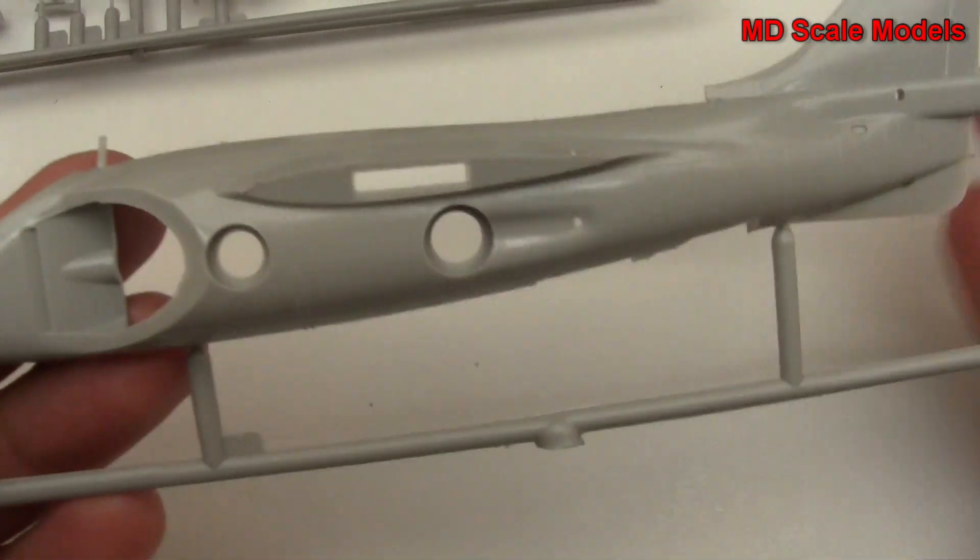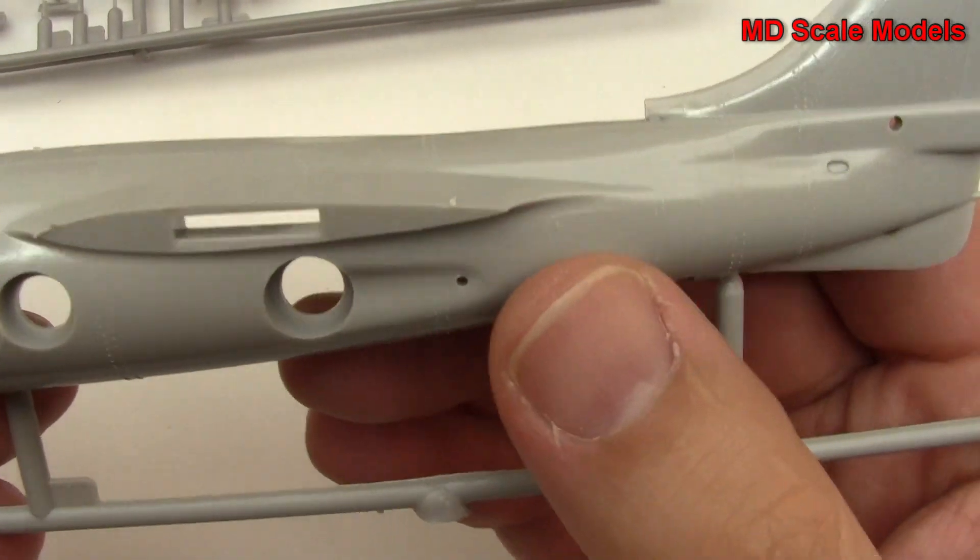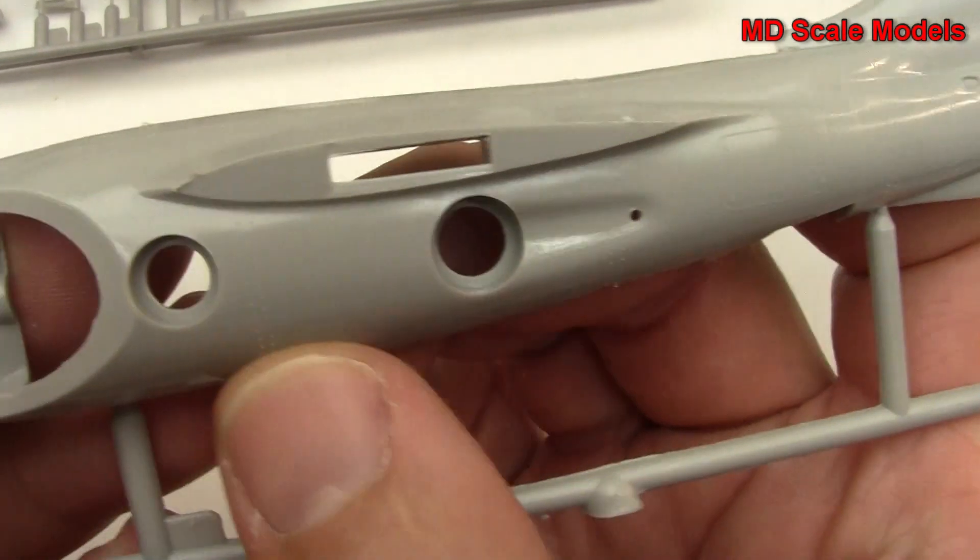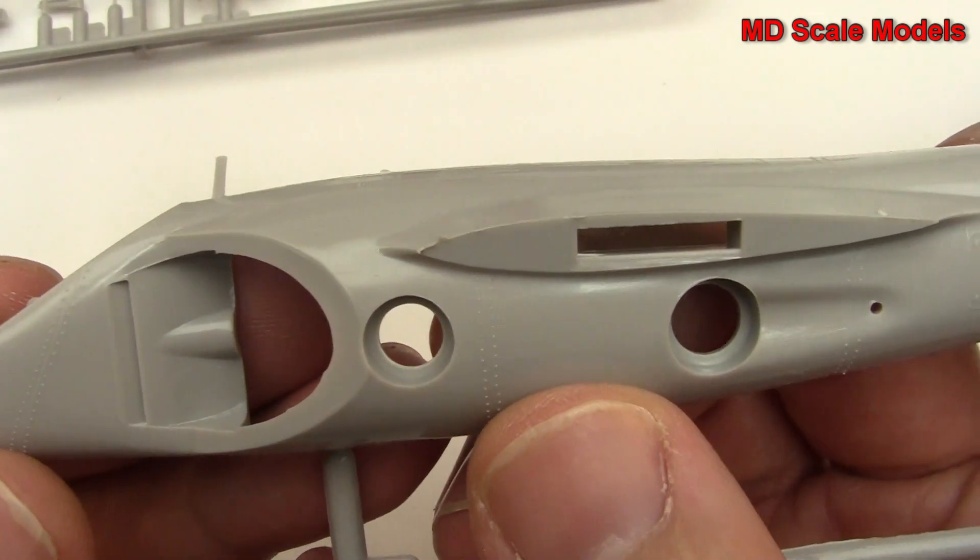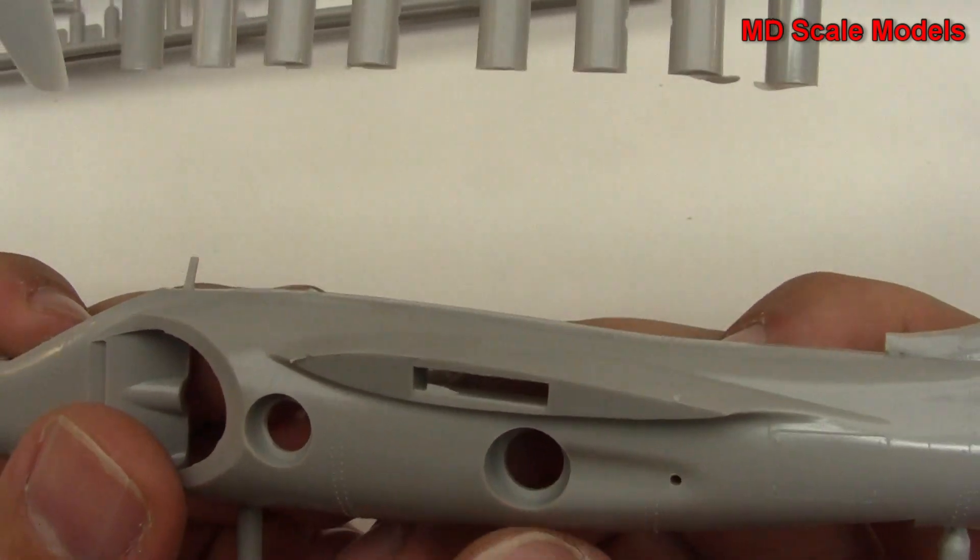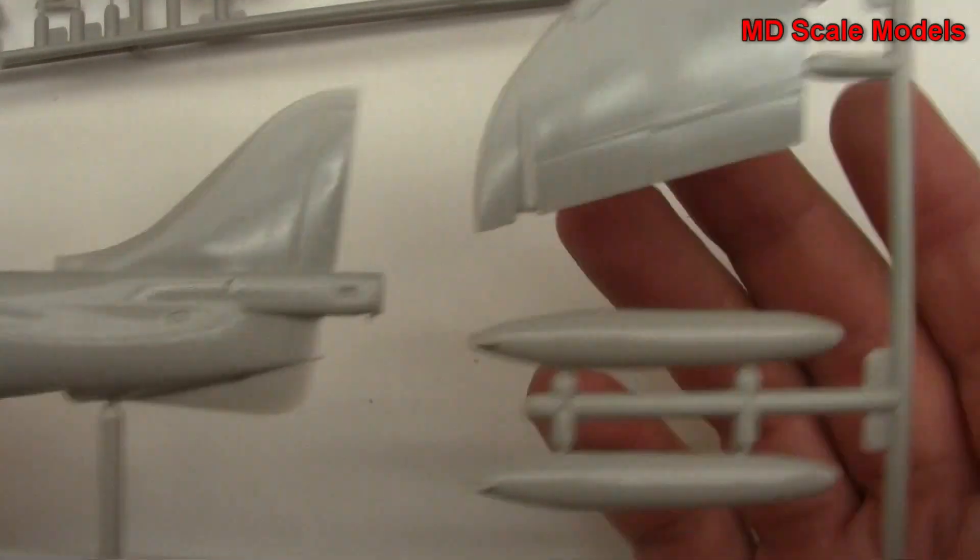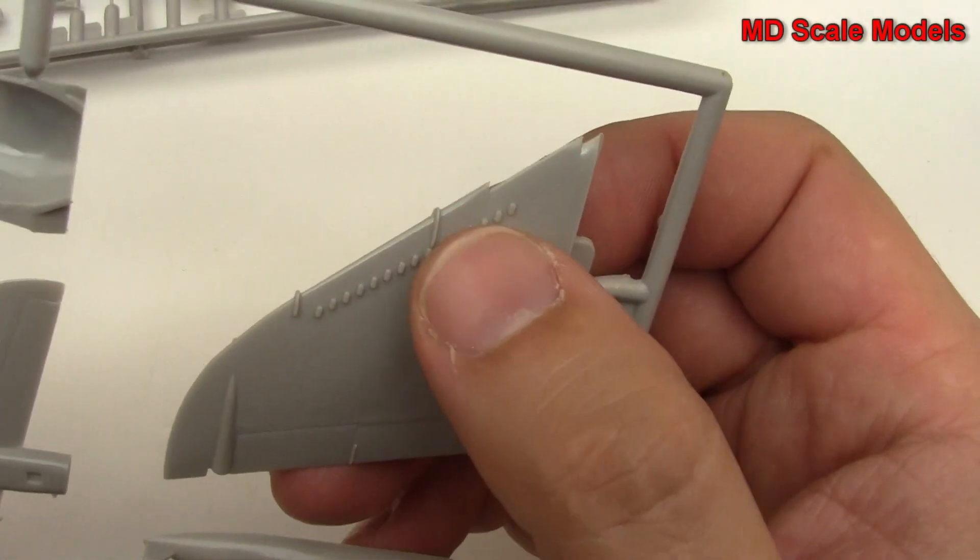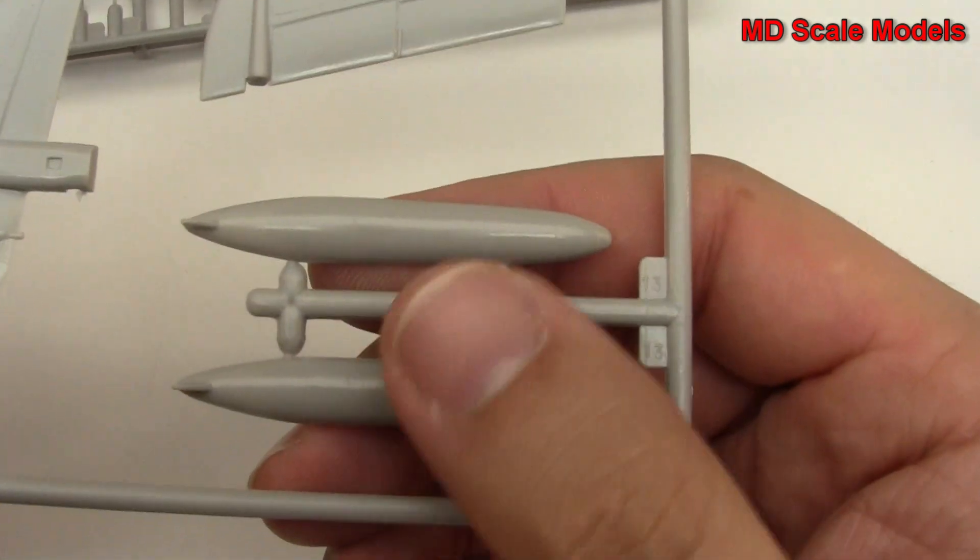So here we have our left side of the fuselage and as you can see here we've got some raised rivet and panel lines. There's our air entry, air ducts and air ducts for the propulsion over here. Here's our left wing.